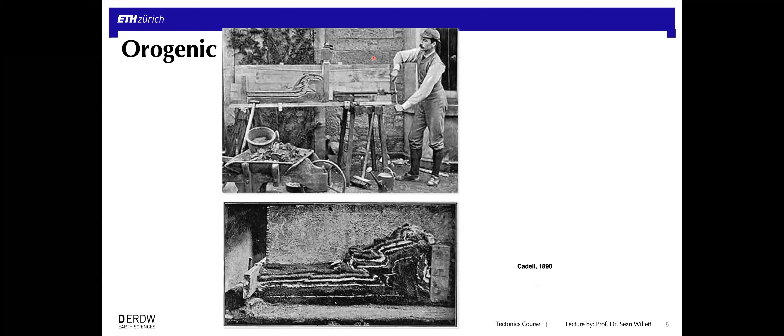This idea is not terribly new. It goes back to some of the first work done in the Alps. This argument was made for the formation of thrust faults or overthrusts, which were of course studied well in the Alps, going back to the 1890s, looking at an analog experiment in which a kind of bulldozer pushing on a layered pile of sand will deform it and form thrust sheets or thrust faults and a deformed wedge — already recognized as analogous to structures seen in the Alps.